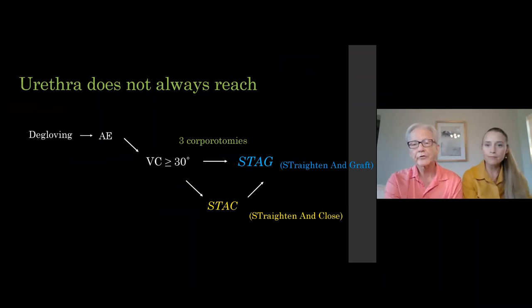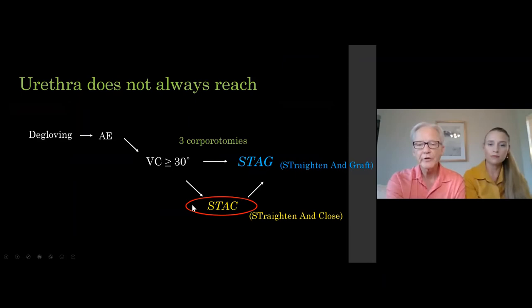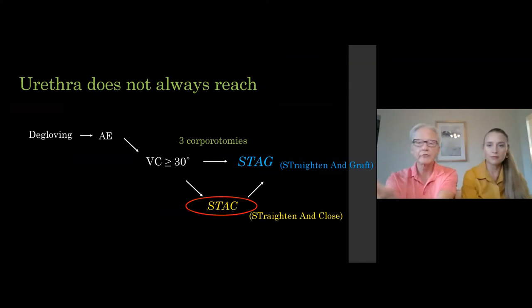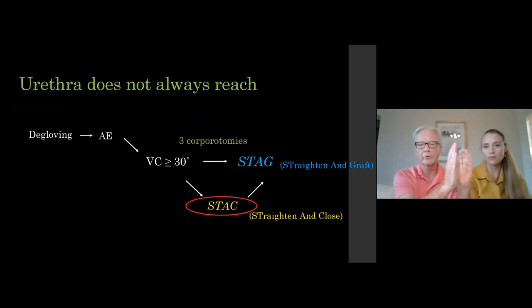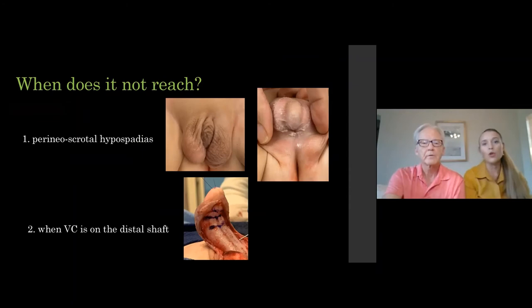When the urethra doesn't reach back past the corporotomies, we break the STAG into components: straighten it, close the skin and let those corporotomies heal, then come back and do a two-stage graft repair. In a STAG, we straighten and graft, then tubularize in the last stage. In this broken-out procedure: we straighten and stop, then graft and stop, then tubularize and stop.